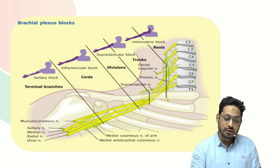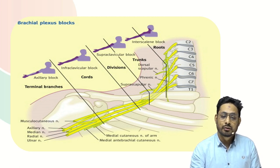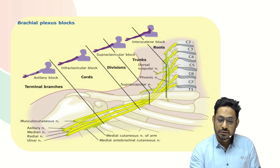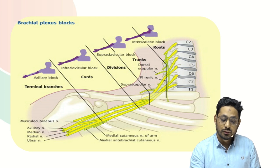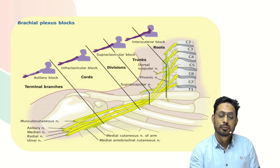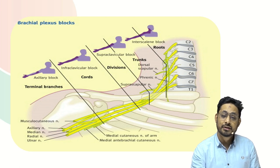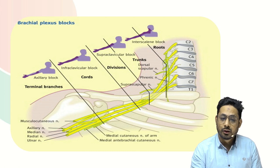All those blocks are used to block at different levels of the brachial plexus. The components of the brachial plexus are root, trunk, division, cord, and terminal branches. Each block mentioned in the options is given at a particular site which blocks a particular region. As shown in the picture, interscalene block blocks the root. The particular site blocked by each block is an important point that may be asked in future exams.